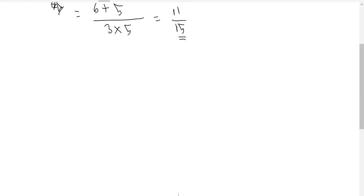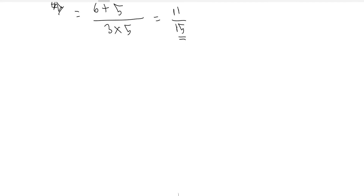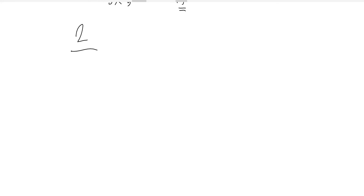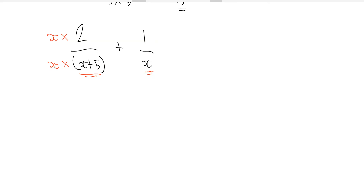Let's move on. How would it work if this time we're actually dealing with letters? We're dealing with the letter x, because that's what's more likely to be included in an exam. You may instead be asked to simplify 2 over x plus 5, plus 1 over x. So how do we go about simplifying this? We need, again, a common denominator. We've got x plus 5 here and x here.